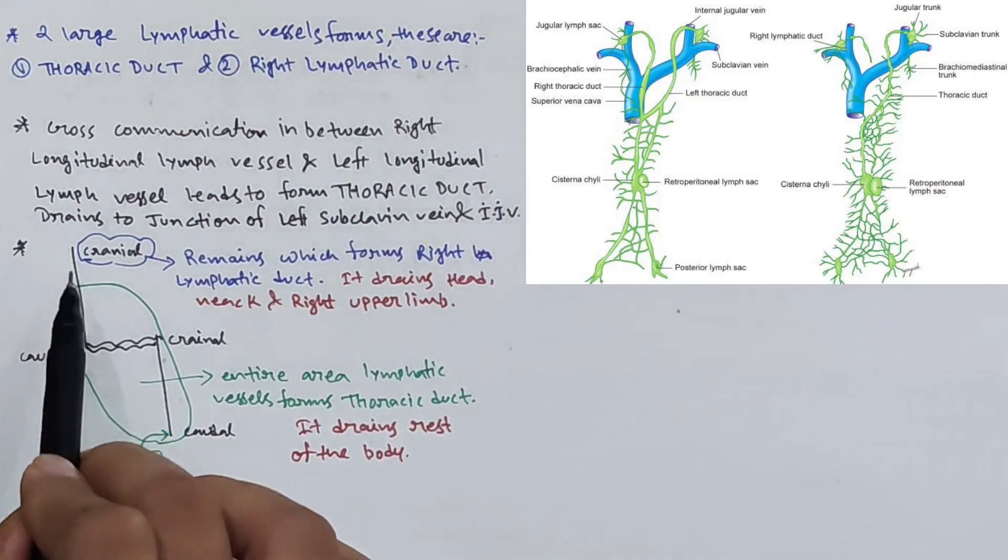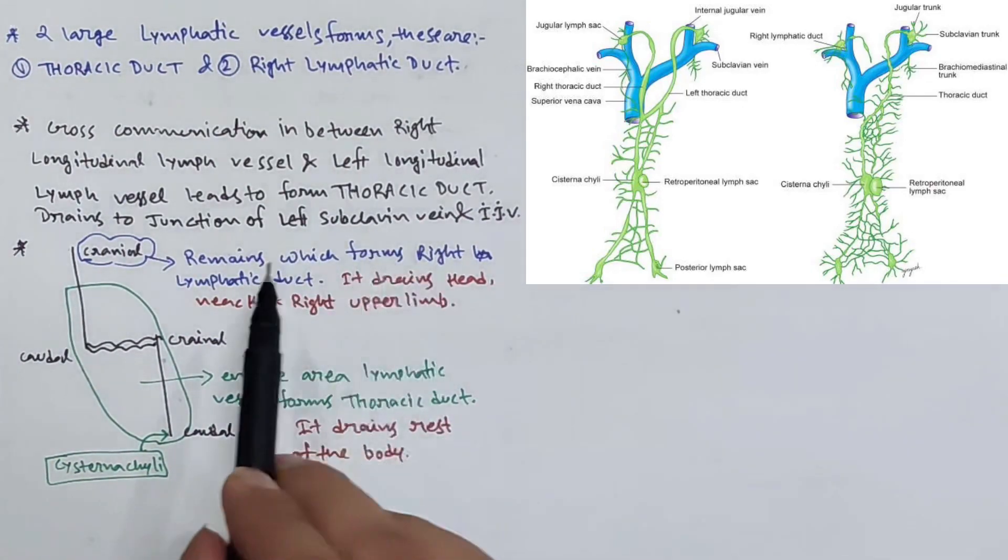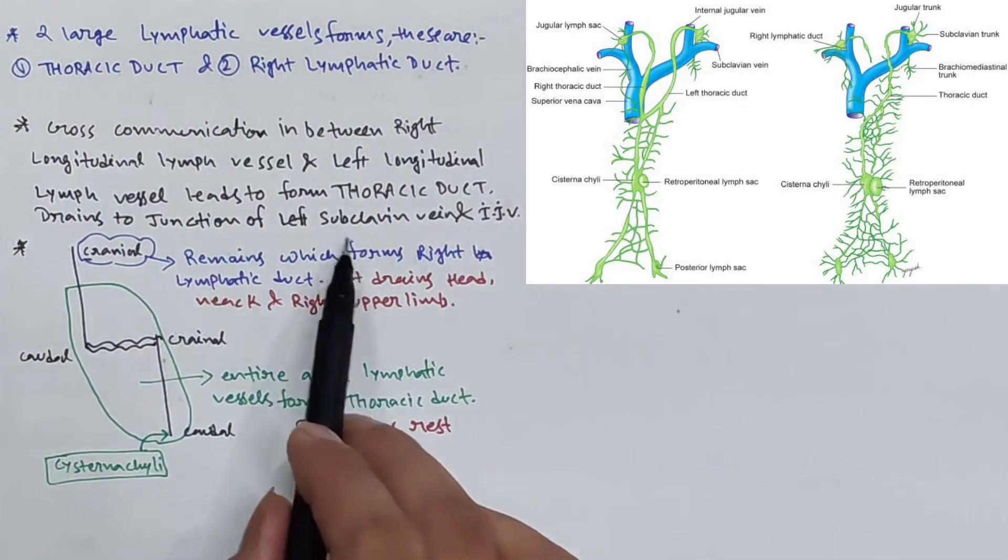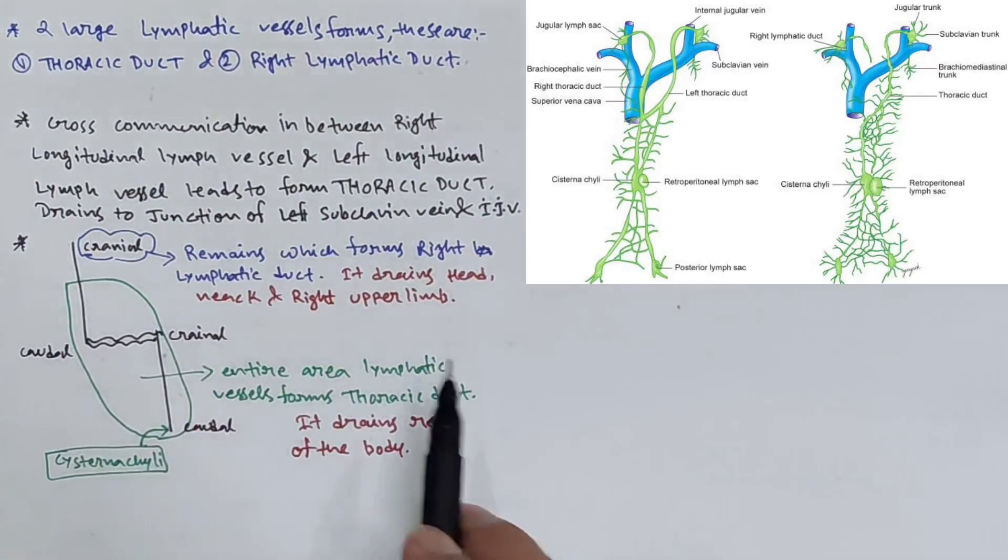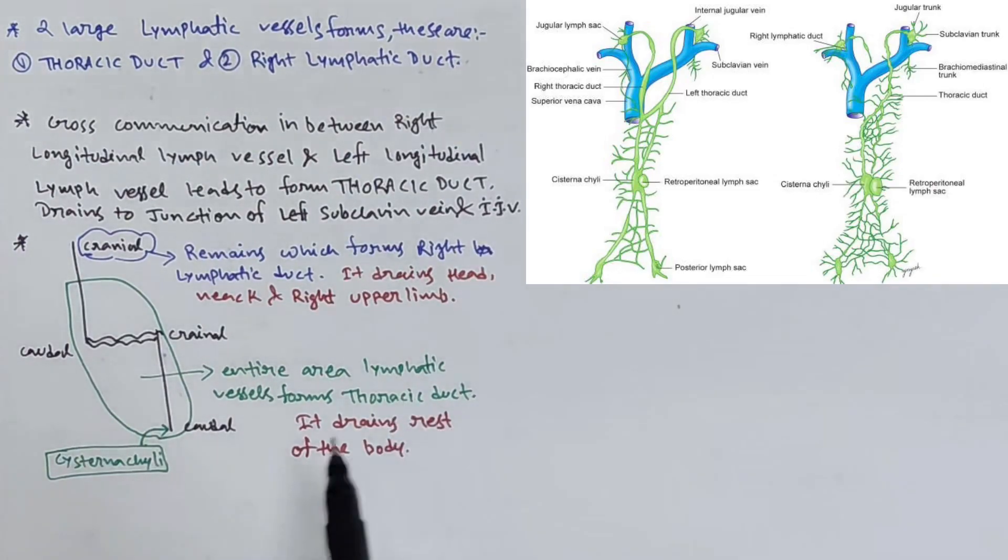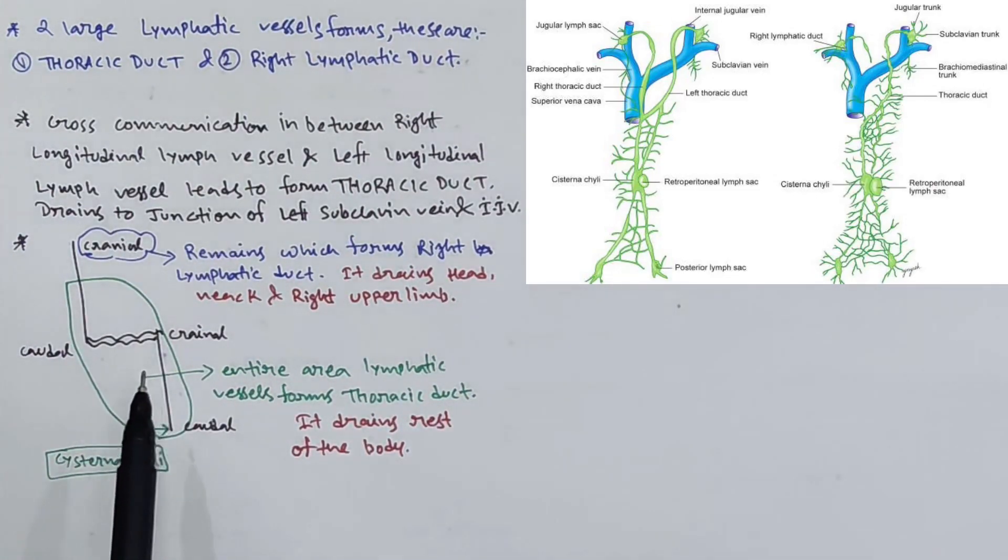This right lymphatic duct drains the head, neck, and right upper limb. The rest of the entire body lymph drains via this entire area which is ultimately drained by the thoracic duct.